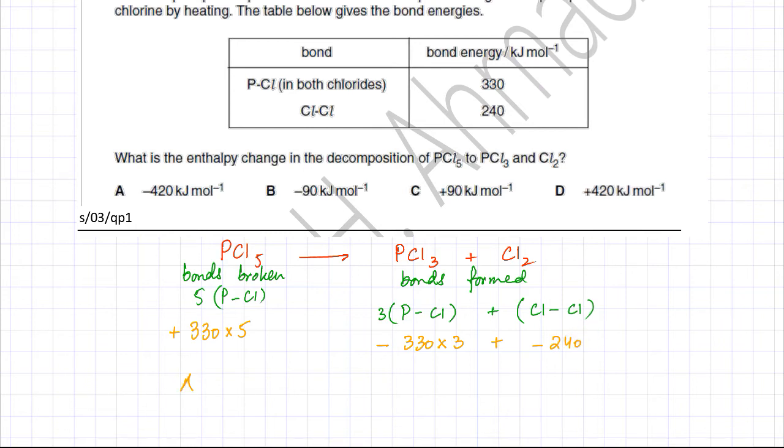Use this simple formula: the enthalpy of a reaction equals the sum of all bond energies. Bonds broken - the energies involved in breaking bonds are positive - minus bond formation or the energy evolved during bond formation.